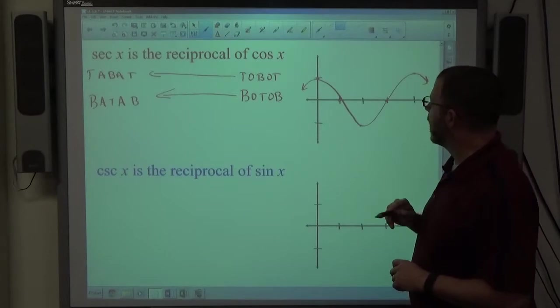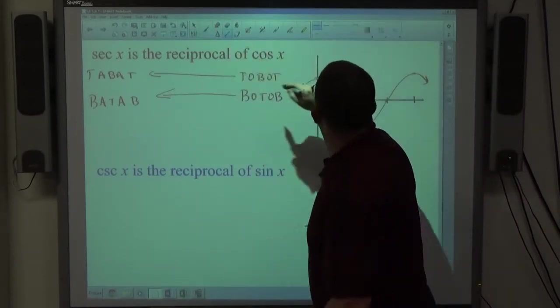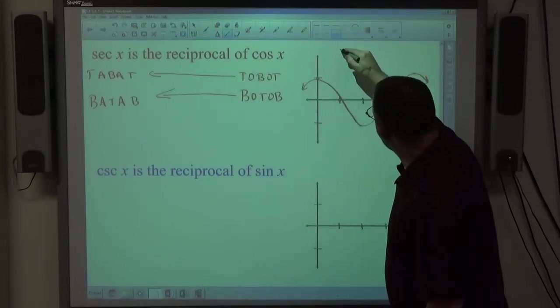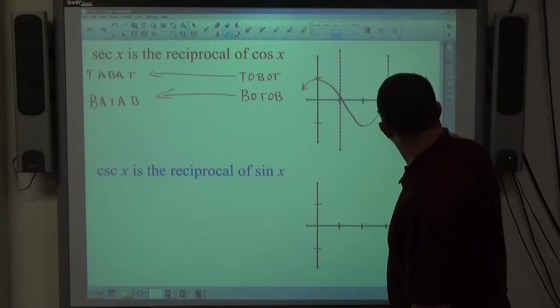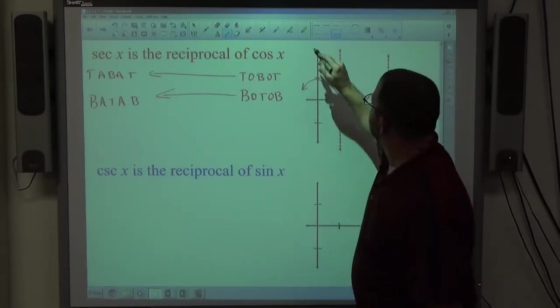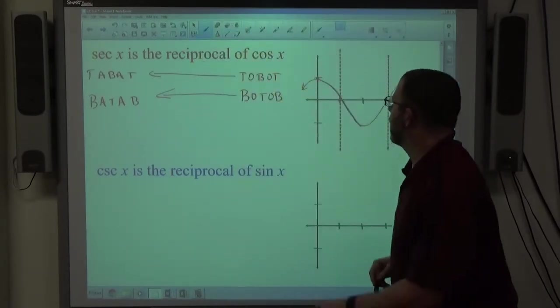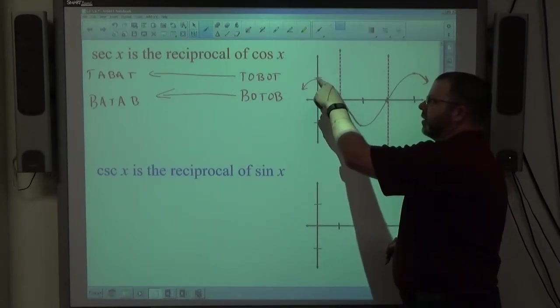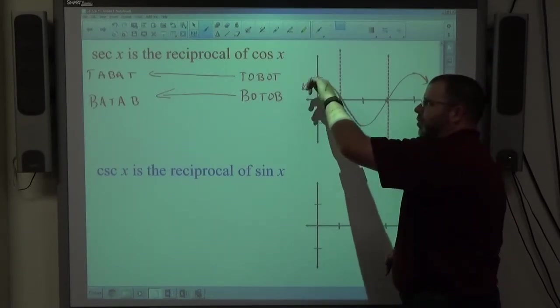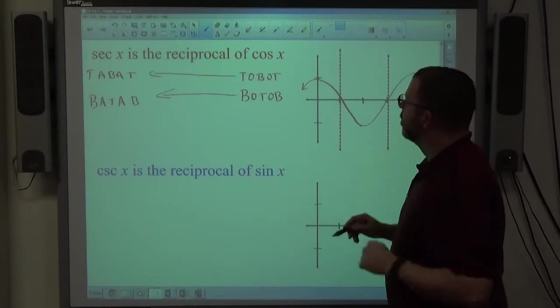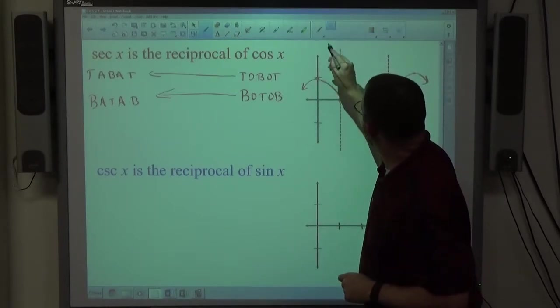And I wanted to graph secant off of that. What happens is everywhere there is a zero, there's an asymptote. And then if you look at the cosine graph itself, it hits its highest point here, then it gets smaller, which means its reciprocal is going to get bigger. So I'm going to use black here to graph it.